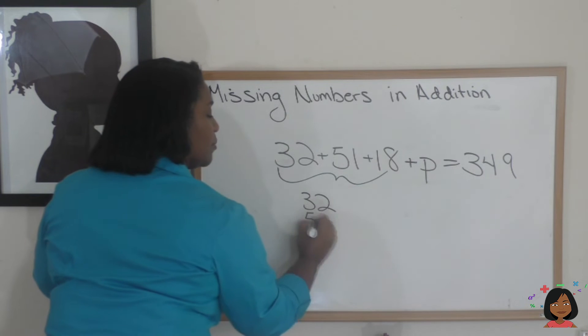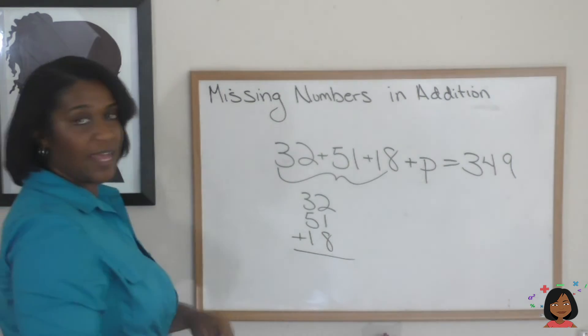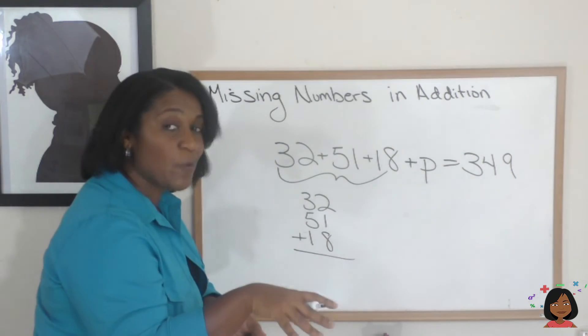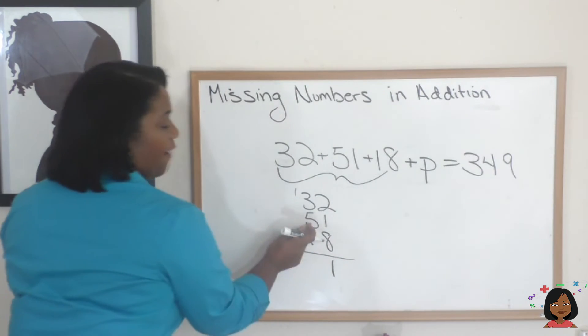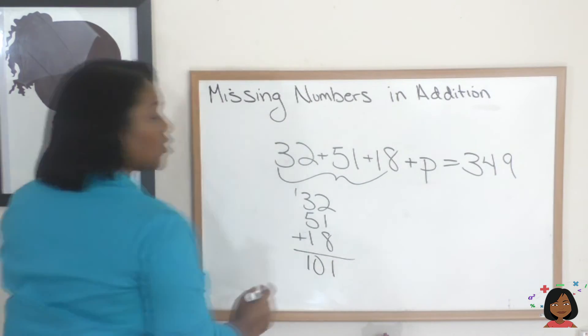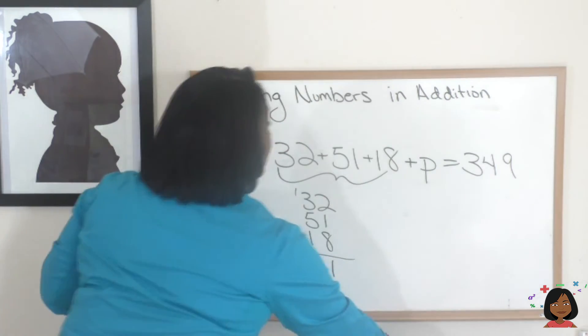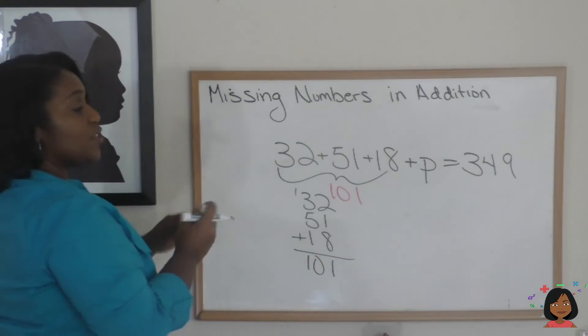32 plus 51 plus 18 equals... 8 plus 2 is 10. I'm always looking for groups of 10 when I can find it. Plus 1 is 11. 5 plus 3 is 8, 1 is 9, and 1 is 10. So we know that all of this equals 101.